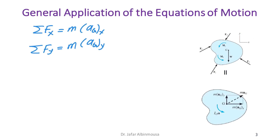We can also sum the moments about the center of mass G, so the sum of all moments about G equals I_G·α.